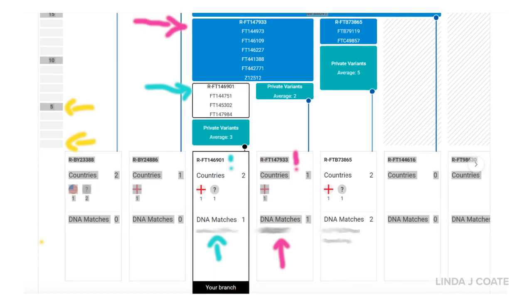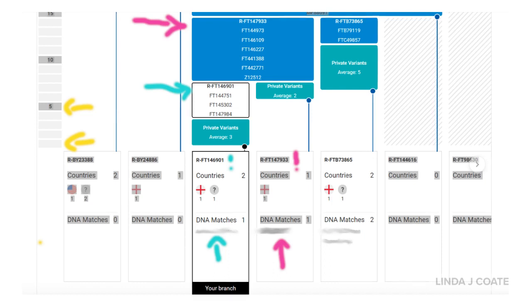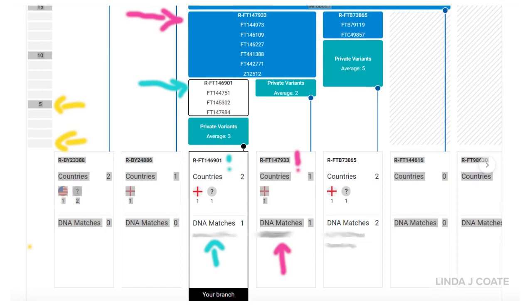Choose the branch that says your branch at the bottom — in this case, it's highlighted with aqua arrows. Look above the aqua arrow all the way to where it says Private Variance, and then above that where it has four breadcrumbs that start with the code RFT146901. That is the haplogroup name for our most recent common ancestor — it's called a breadcrumb, and it represents Henry Cote, who we know is our most recent common ancestor through historical documentation.